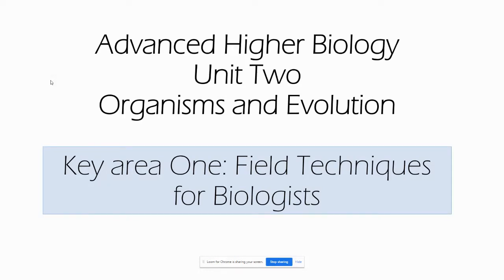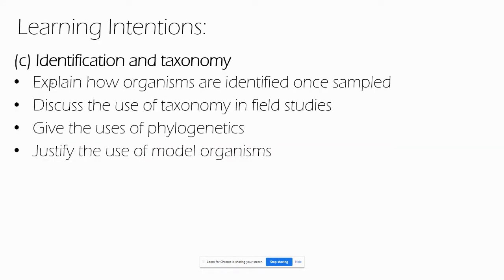This video covers Advanced Higher Biology Unit 2, Organisms and Evolution, specifically Key Area 1: Techniques for Field Biologists — Identification and Taxonomy. We'll explain how organisms are identified once they're sampled, discuss the use of taxonomy in field studies, give the uses of phylogenetics, and justify the use of model organisms.